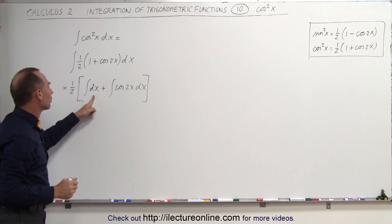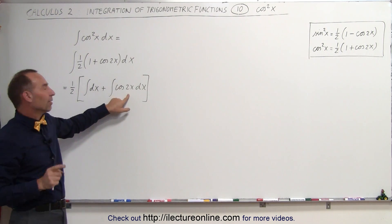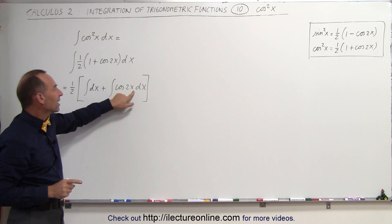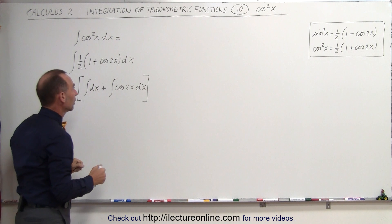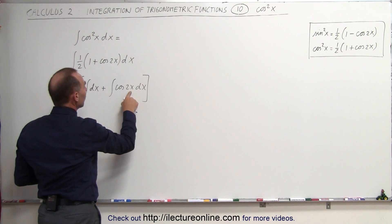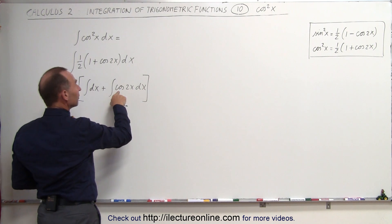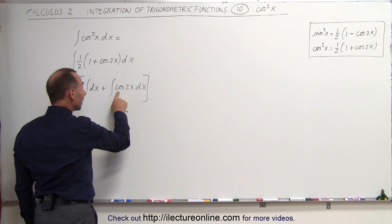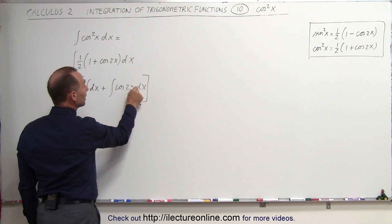Now this is an easy integral to integrate, but here we have to be careful because we have the cosine of 2x dx, which means we need the differential of 2 times dx. If we let u equals the cosine of 2x, the derivative would be the sine of 2x times 2 dx, so we need a 2 in there.